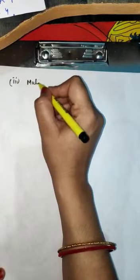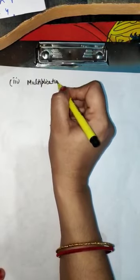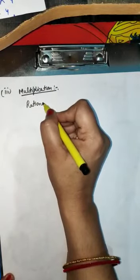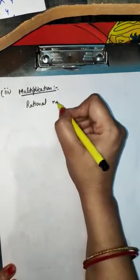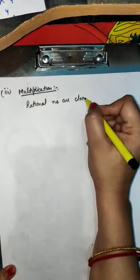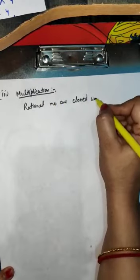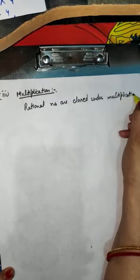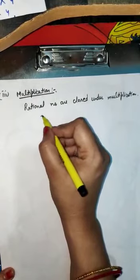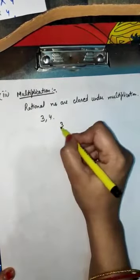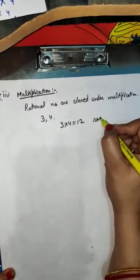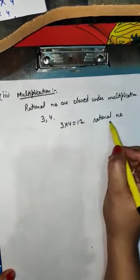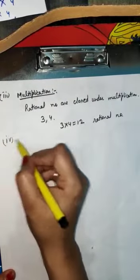The third part is multiplication. Rational numbers are also closed under multiplication. For example, if there are two rational numbers 3 and 4, then their multiplication is also a rational number. The fourth part is division.